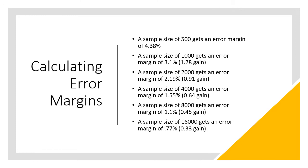If you went ahead and doubled all the way up to 16,000 respondents, that's how much it takes to get an error margin of less than 1%. But again, the gain over an 8,000-person sample is really just not very significant.